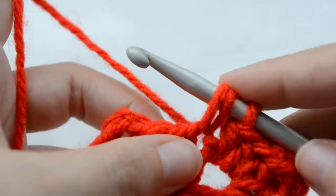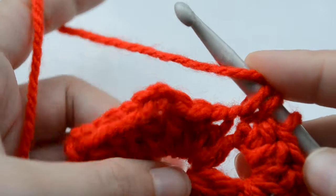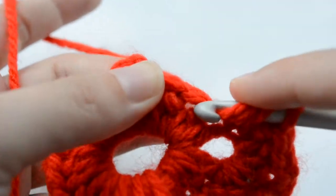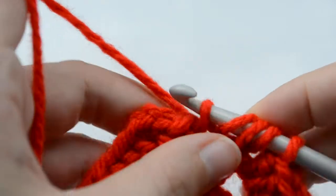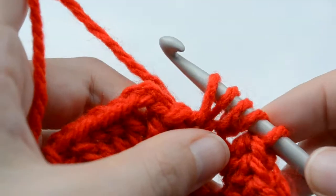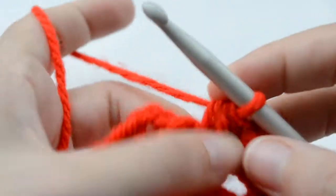I left three loops on my hook. Wrap the yarn over your hook and insert it through the next one and pull the yarn through. We have five loops, and then pull material through all five.